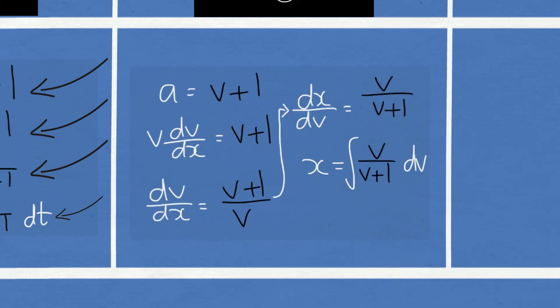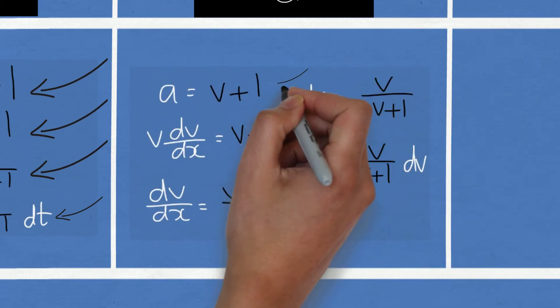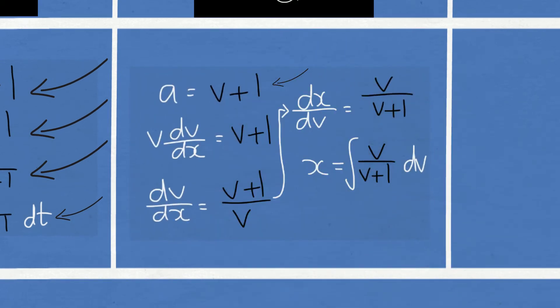An example would be you're given acceleration equals v plus 1 and you're asked to find displacement or position in terms of velocity. You have to move the velocity over to the other side first by dividing and then flip the differential equation and anti-diff accordingly.